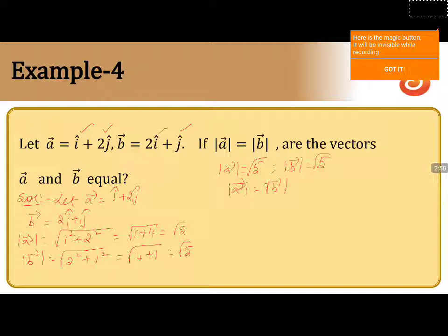Even here the y-components are different. So, though the magnitudes of A and B are equal, because there is a difference in the x and y components, the vectors A and B are not equal. Therefore, we can say that vector A is not equal to vector B, and the given vectors are not equal.